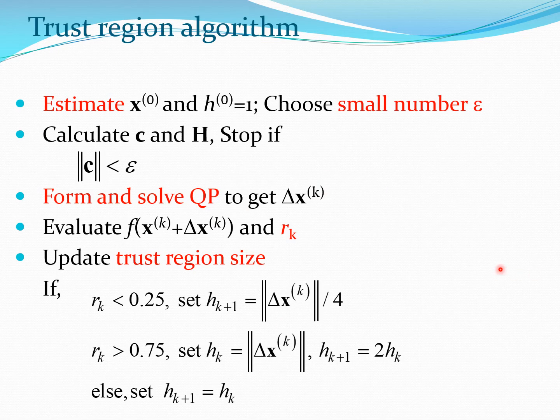So essentially now we are in a position to state this method as an algorithm. So you start with estimating x0 which is the starting point and we select h0 is 1 then we choose a small number epsilon. Calculate c and h stop if norm c is less than epsilon. So this is the typical stopping criteria. Now you form and solve the quadratic program to get delta xk. You find value of f at xk plus delta xk. You know the value of q from the quadratic program and then you can calculate the value of rk.